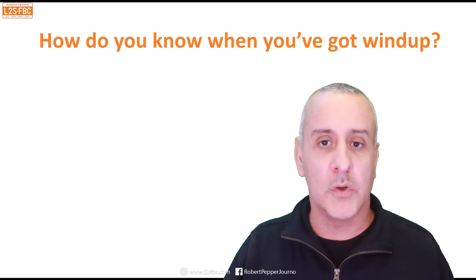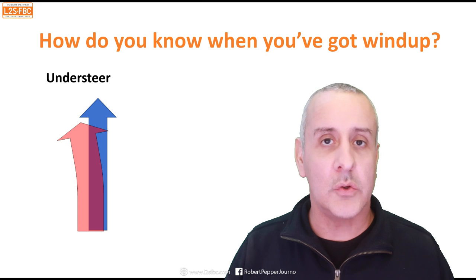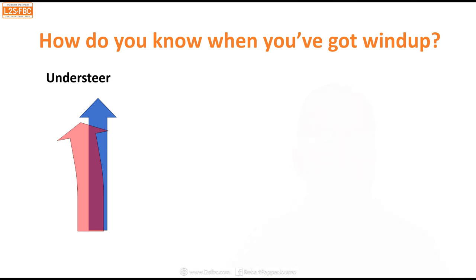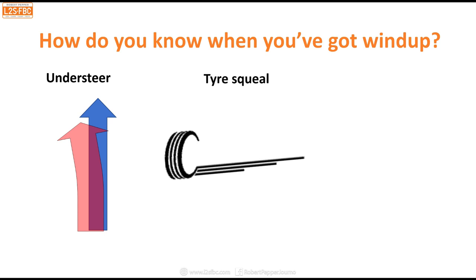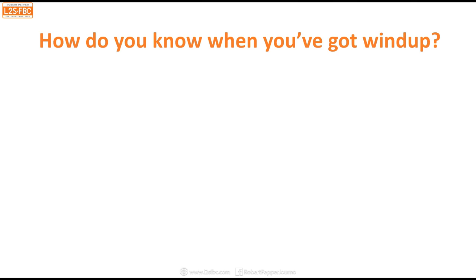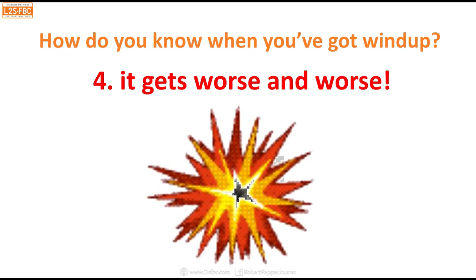How do you know when you've got wind-up? There are four signs. One: understeer — the vehicle tries to go straight ahead and you need more and more steering lock to turn. Two: tyre squeal — the tyres protesting because they're being forced to turn at speeds they don't want to, fighting with the transmission. Three: vibration. Four, and most importantly: it gets worse and worse. Every time you turn left or right, the wind-up builds up over time to the point where it's likely to actually destroy your transmission.